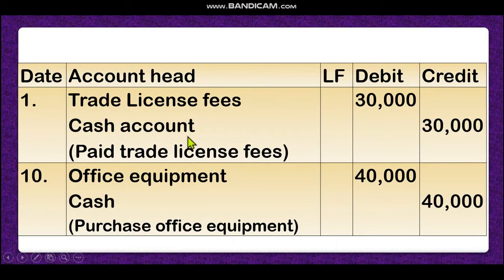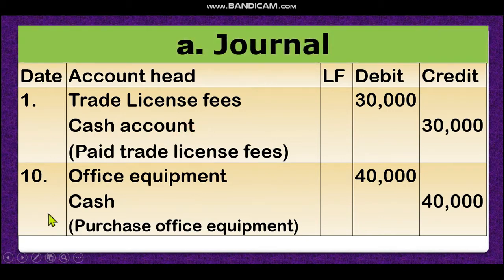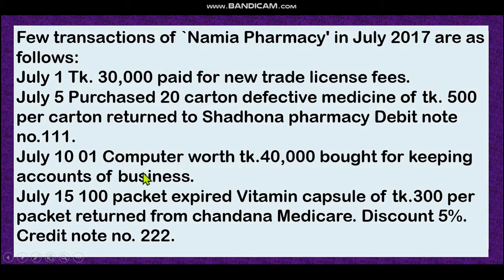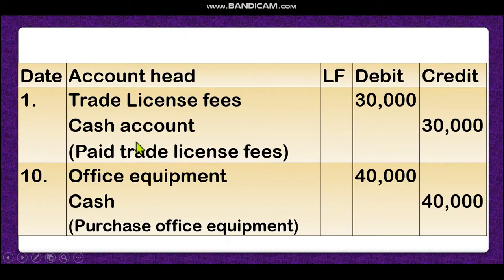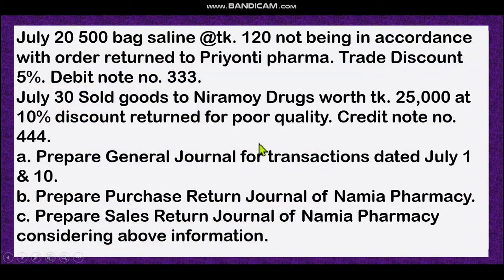This is the format of journal. At first you have to write the date, then account head, then debit column, then credit column. The first transaction: 30,000 taka paid for new trade license fees. This organization takes a trade license from the government, so trade license fees is 30,000 taka. Cash money decreases, so cash account is credited. Trade license fees is an expense — every year he has to pay. So trade license fees expense account is debited and cash account is credited.